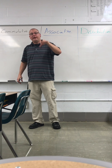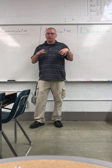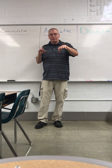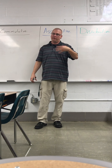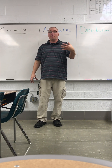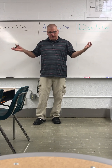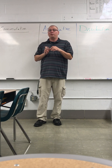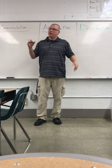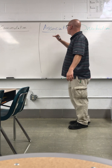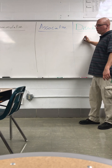Alright, we're going to talk about the three properties that we learned. We're not going to talk about the identity property because those are super easy — adding zero to something means something doesn't change, multiplying something times one means something doesn't change. We're going to talk about commutative, associative, and distributive.